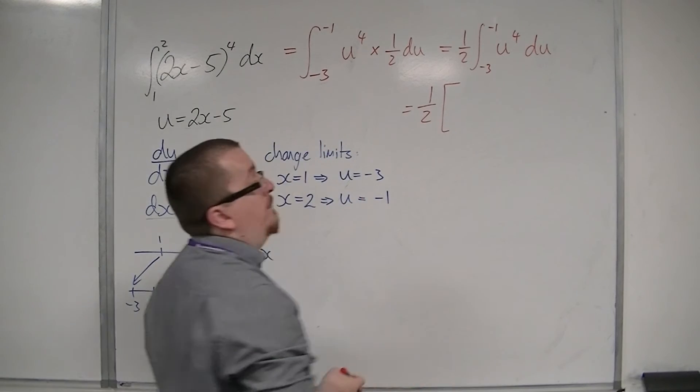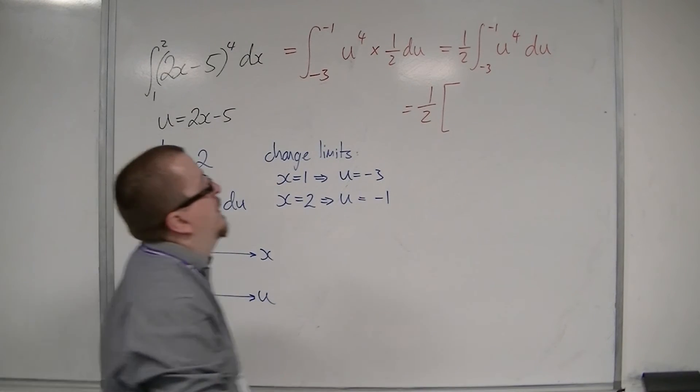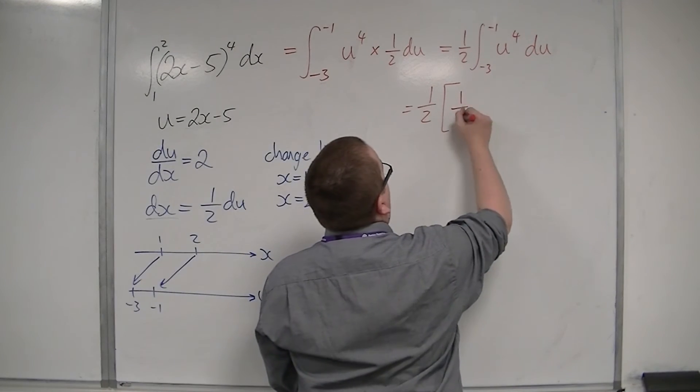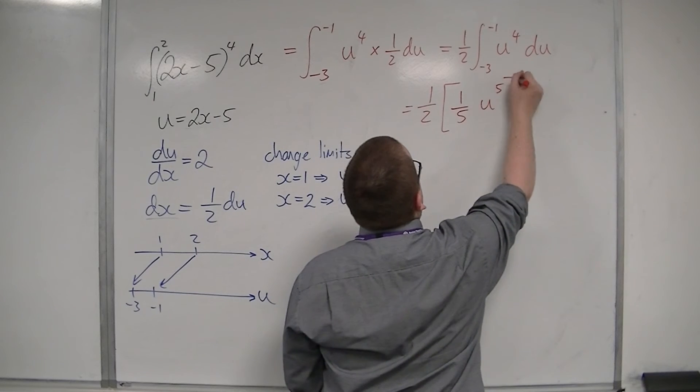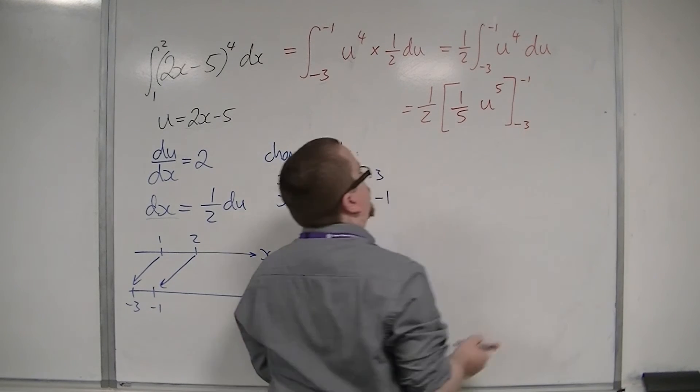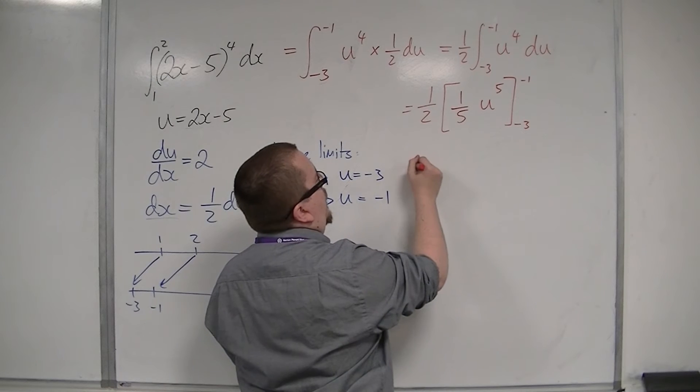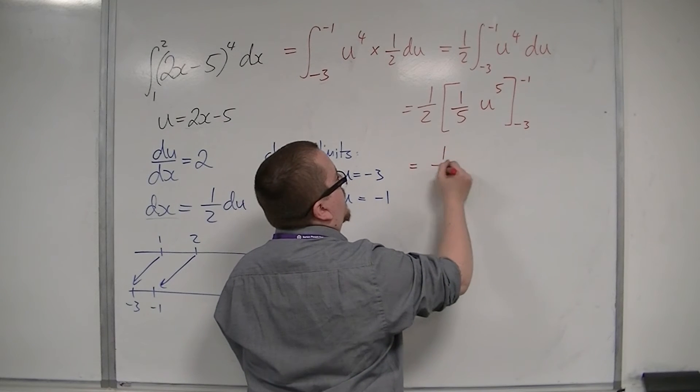I can then integrate this. So, I'll be using square brackets, because I'm with a definite integral. Add 1 to the power, divide by the new power. Okay. Now, I can bring that half inside, if I like.